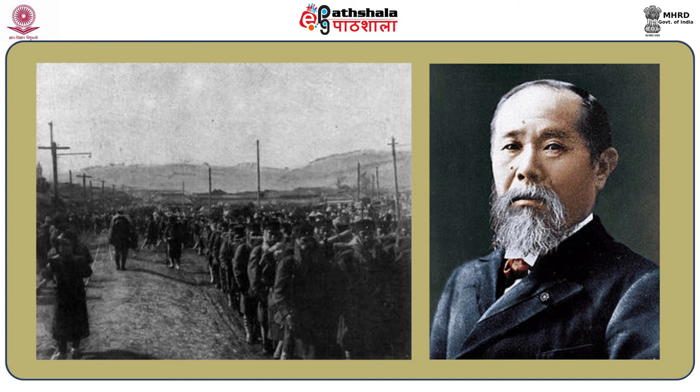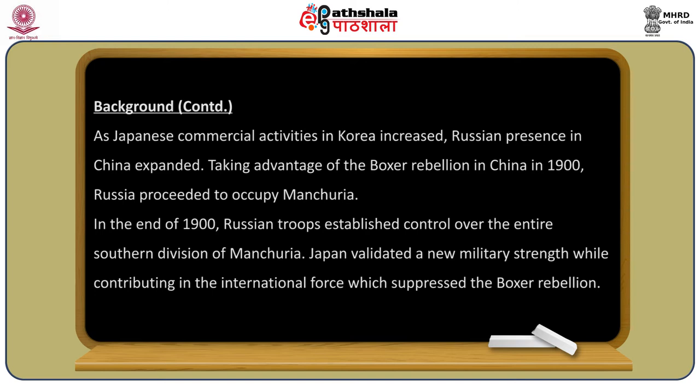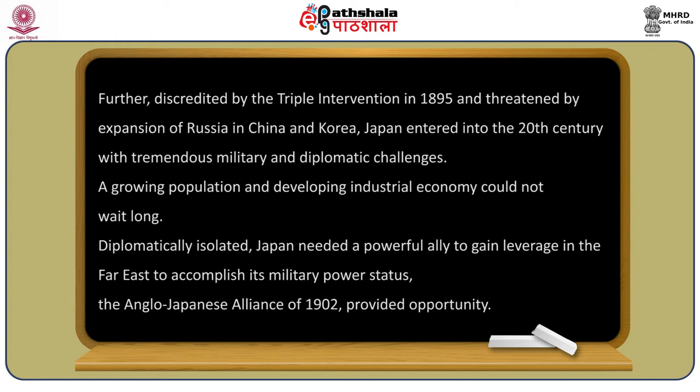By 1900, Japanese-Korean trade and Japanese living in Korea had considerably increased. Japan acquired railway rights for the Seoul-Incheon and Seoul-Busan rail lines. As Japanese commercial activities in Korea increased, Russian presence in China expanded. Taking advantage of the Boxer Rebellion in 1900, Russia proceeded to occupy Manchuria. By end of 1900, Russian troops established control over the entire southern division of Manchuria.